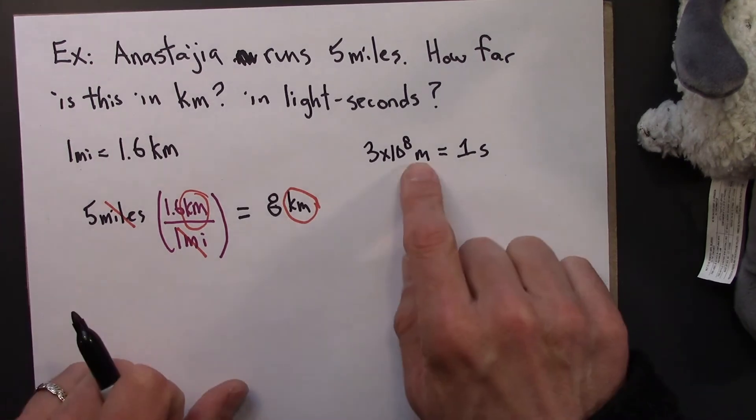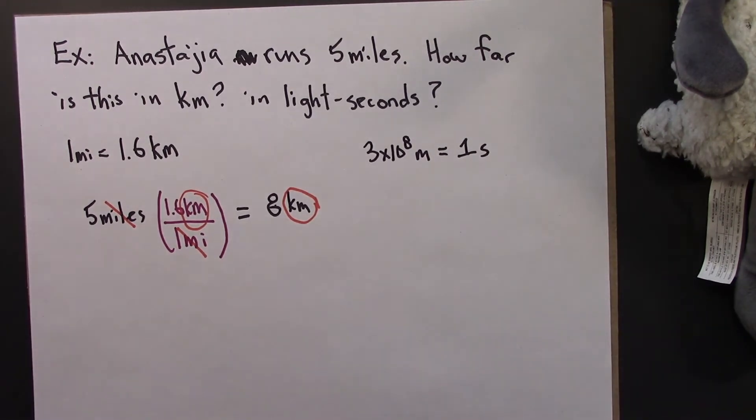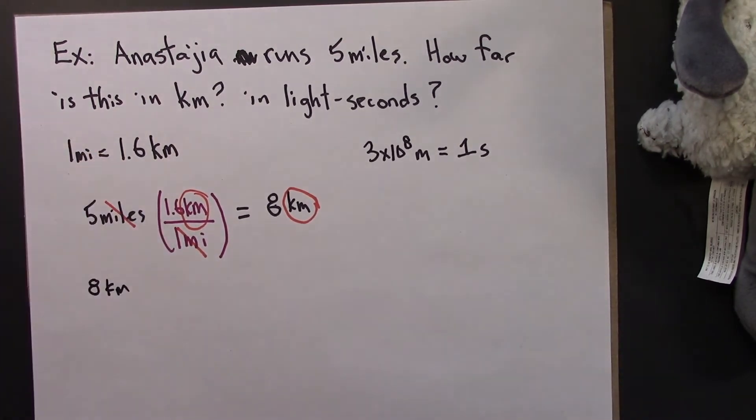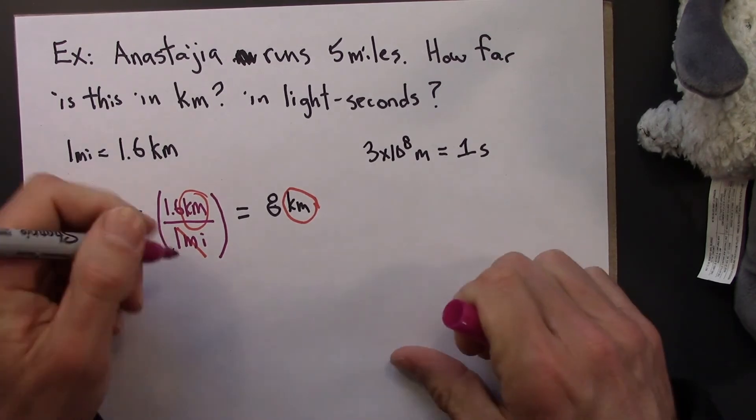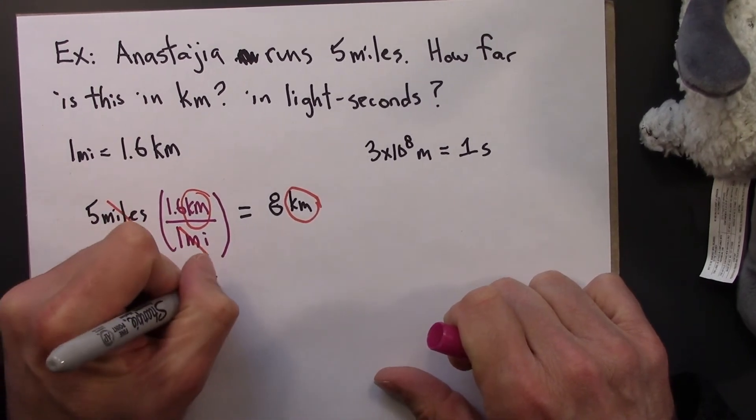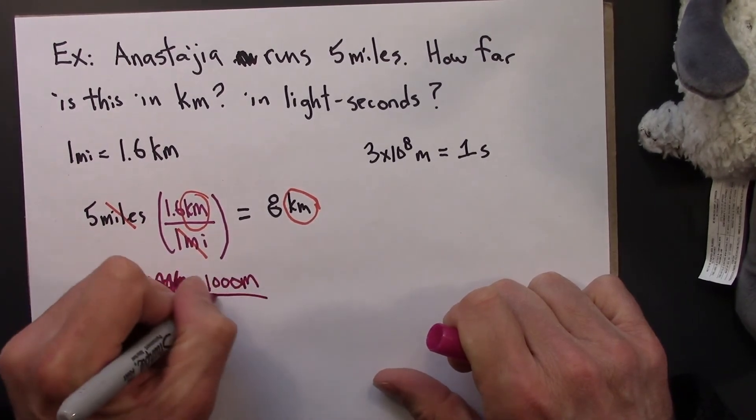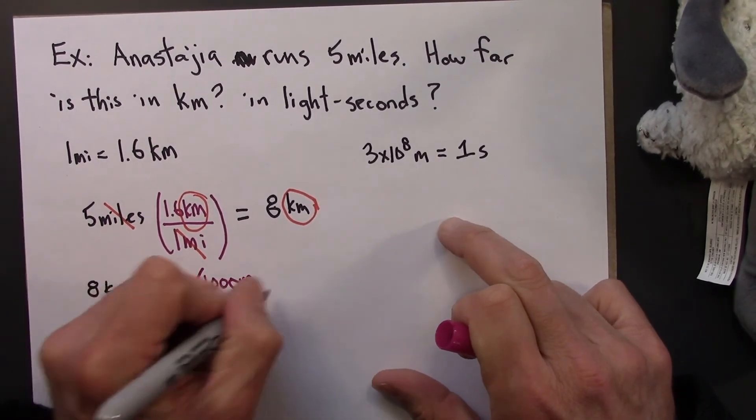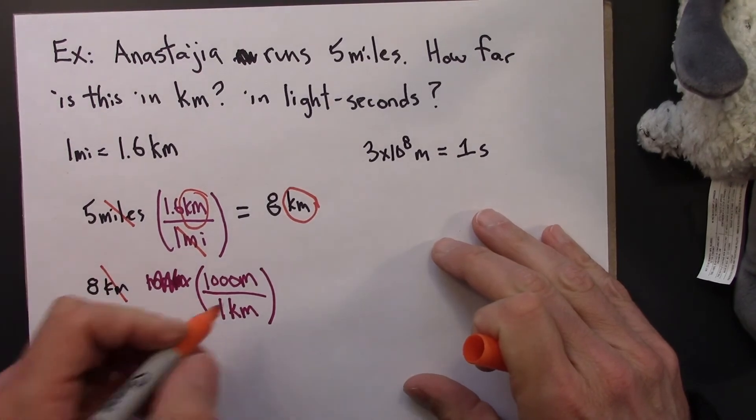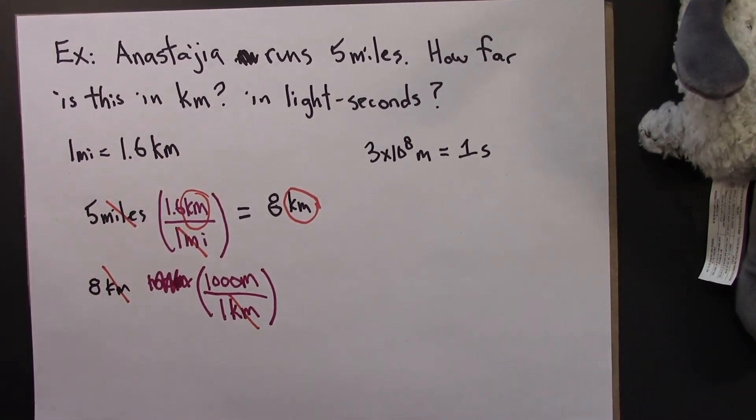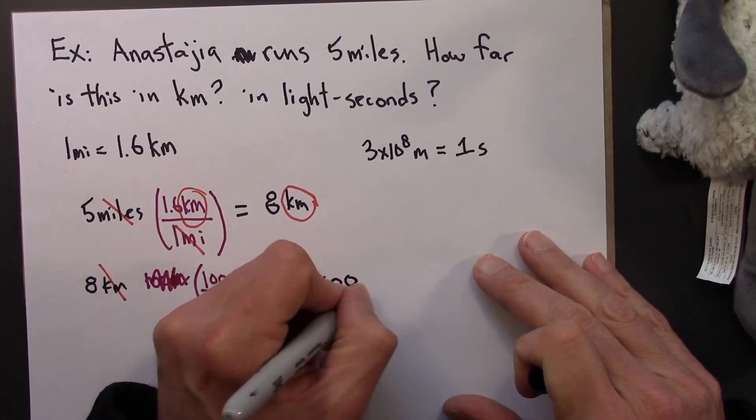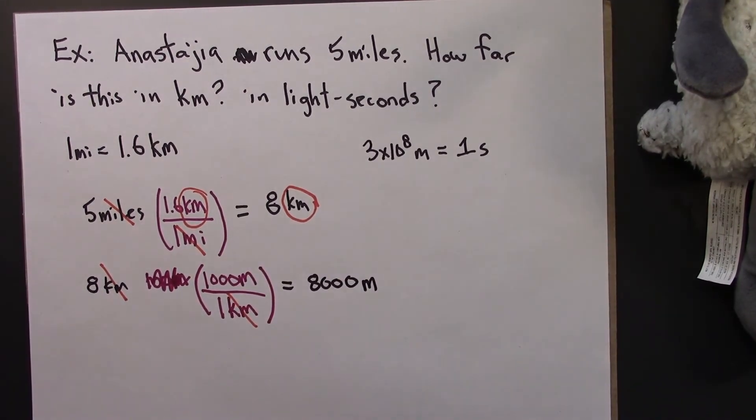Alright. So I've got meters and kilometers here. I'm going to have to do another conversion first. So 8 kilometers. Well, there are 1,000 meters in one kilometer. So the units cancel. And I get 8,000 meters.